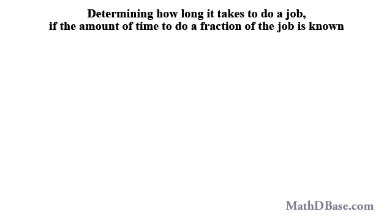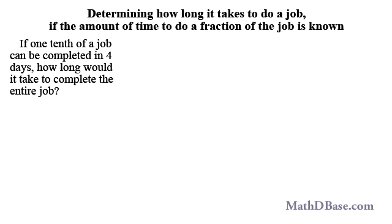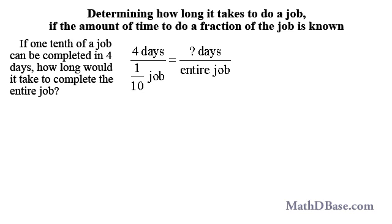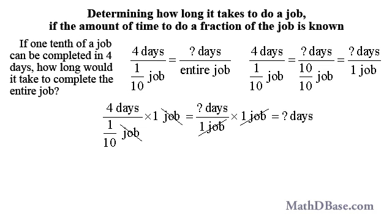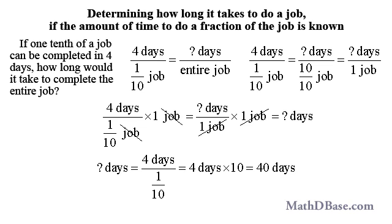Let's digress and look at how long it takes to do a job if we know how long it takes to do a fraction of that job. If one-tenth of a job can be completed in four days, how long would it take to complete the entire job? Setting up a proportion: four days over one-tenth equals the unknown days over one job. Multiplying both sides by one job and cancelling units, we have four days divided by one-tenth, which equals four days times ten, or 40 days, to complete the entire job.